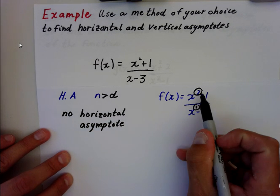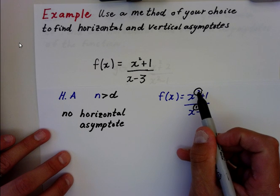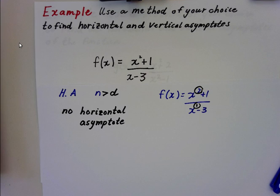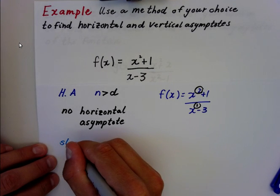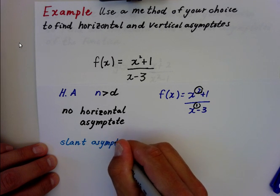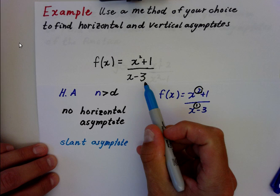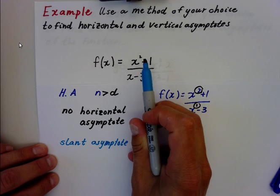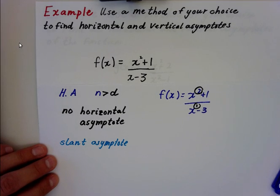Now, it just so happens that because the numerator is greater in power by 1, there actually would be a slant asymptote. But we're not going to find that. They're not asking us to find that in this video. We just want vertical and horizontal asymptotes. So the vertical asymptote is X equals 3. There is no horizontal asymptote because the numerator has a greater power.